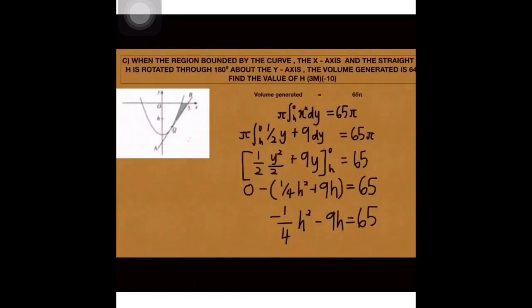Lepas tu baru kita boleh integrate. Pi tu kita dah boleh potong. Integrate kita dapat Y square per 4 tambah 9Y. Lepas tu apa nak kena buat? Baru boleh masukkan range. Masukkan kosong dapat kosong, tolak dengan 1 per 4 H square tambah 9H dapat bersamaan dengan 65.